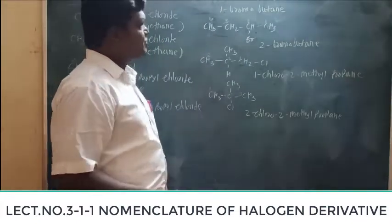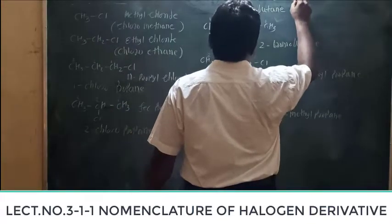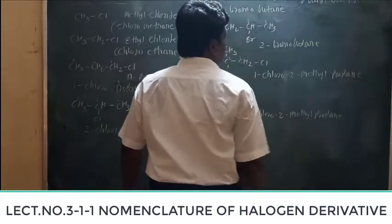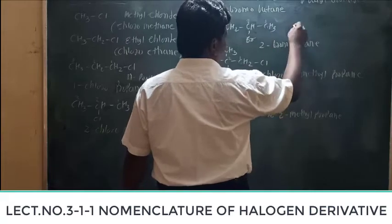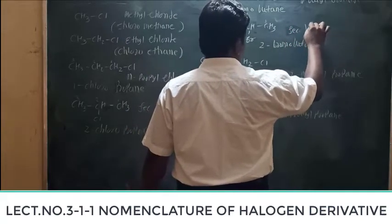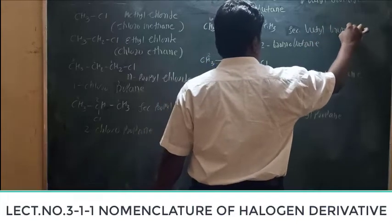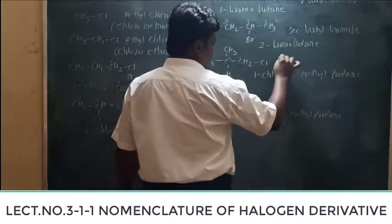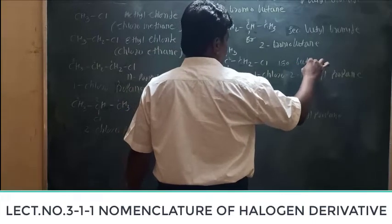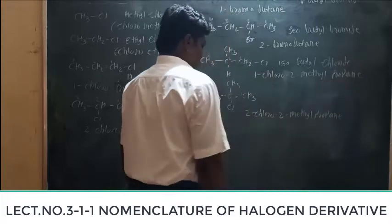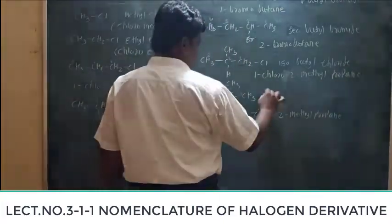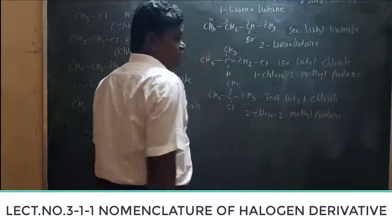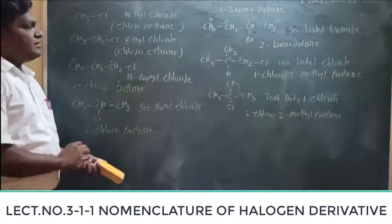These are the IUPAC names. Common names are also important. The common name of the first compound is N-butyl bromide, the next is secondary butyl bromide, the next is isobutyl bromide, and this one is tertiary butyl bromide. This is the method by which you can easily name compounds using both IUPAC and common name systems.